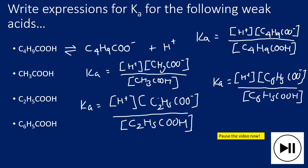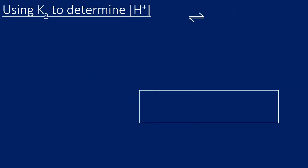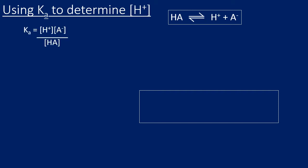So what's the point in knowing this Ka value? Well, if we have an expression for Ka, Ka includes H⁺, and we know that H⁺ is our key to working out the pH. So if we have the acid dissociation constant, there's a way for us to work out the pH because we can find H⁺. Let me explain how that works and we'll do some practice.